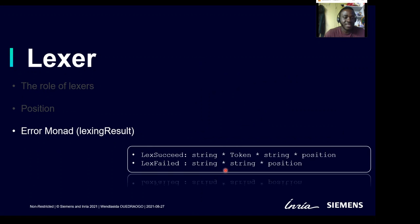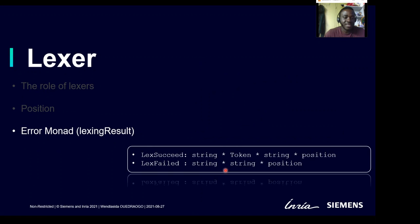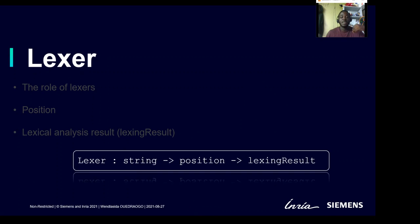Lexical analysis can succeed or fail. When it succeeds, it produces a Lexem, that is the substring that the token encodes. It also produces the token and returns the remaining string from the source code and the position after the lexical analysis. When the lexical analysis fails, it has to produce an error message, the remaining string in the source code, and also the current location. A Lexer can be defined by a function taking a string and a position and returning a Lexing result.